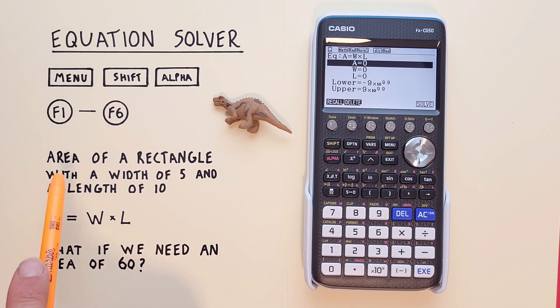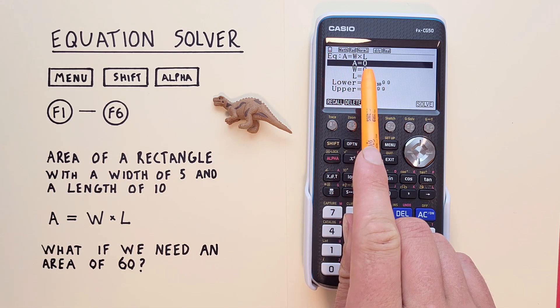For our equation, again, we have an area of a rectangle with a width of 5 and a length of 10. And we want to solve for the area. So for A or area, we'll leave that blank.